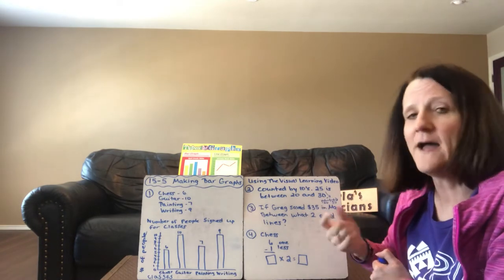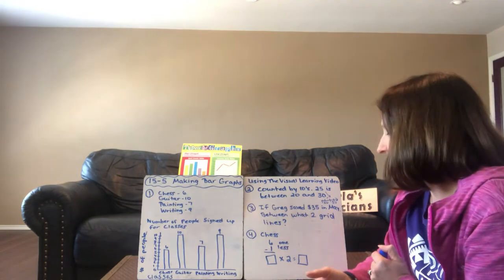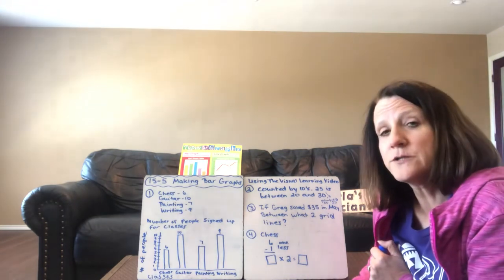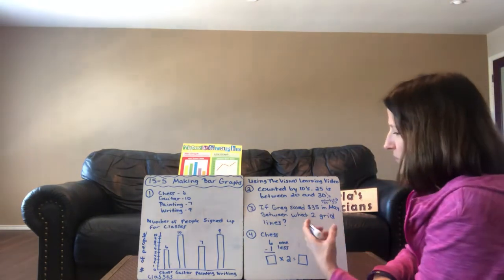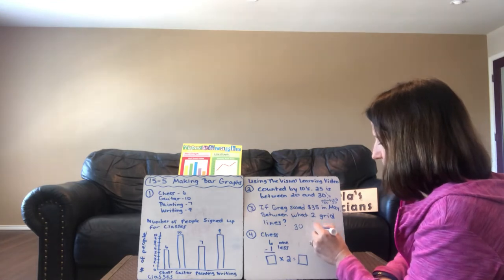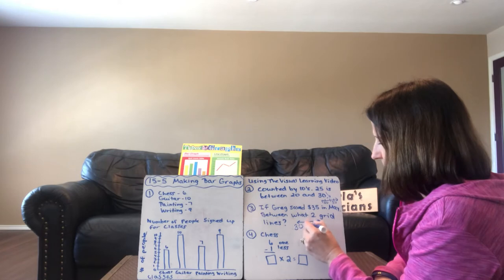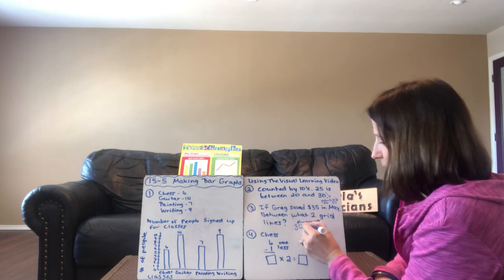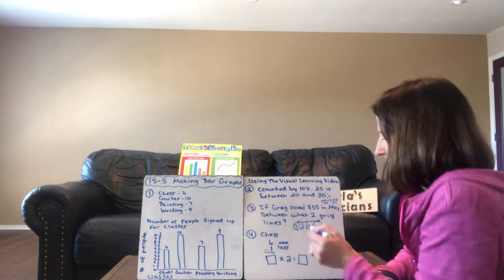We're counting 5, 10, 15, 20, 25, 30, 35, 40. So between what two grid lines would we find 35? You got it. We would find it between 30 and 40 because when we're counting on the number line, 35 would be right in between the 30 and the 40.